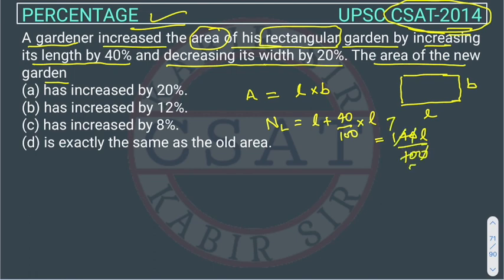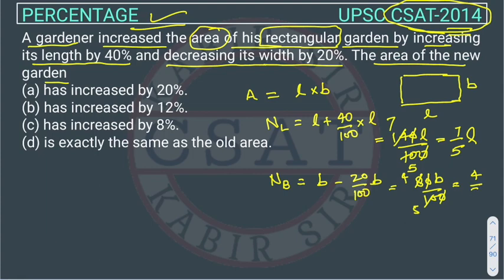And what's the new breadth? It will be decreasing by 20%, so B minus 20% of B. This will come out 80B upon 100. This zero will cancel this zero, and we can simplify it, so this will be 4 by 5B.